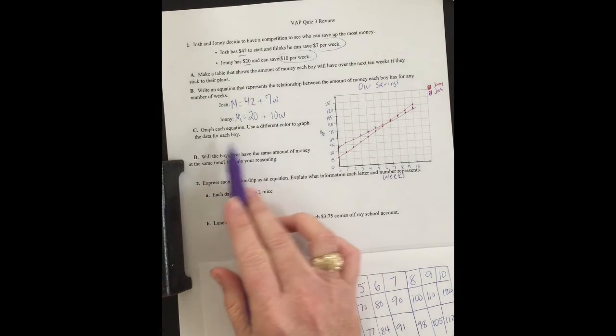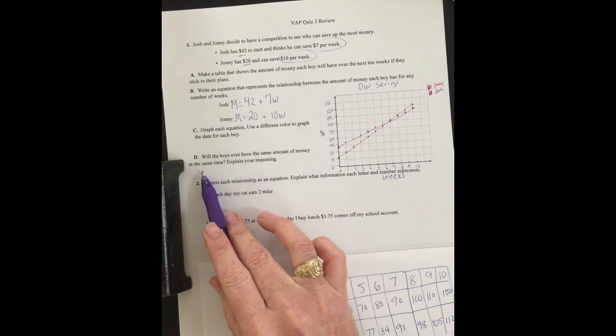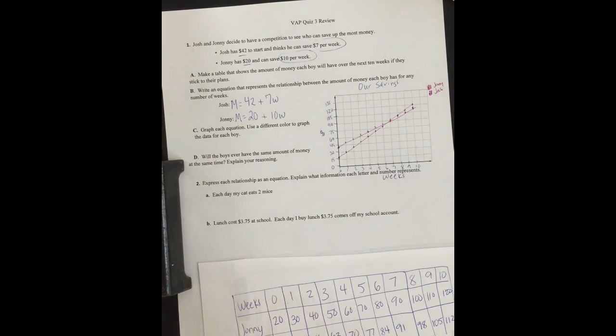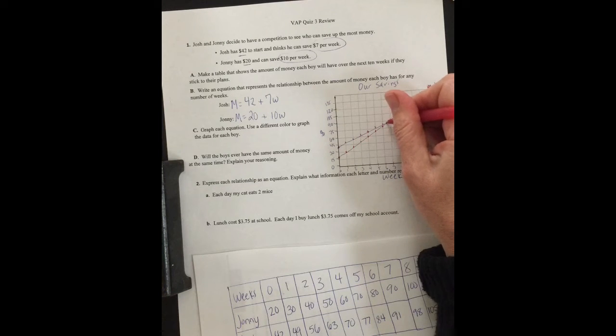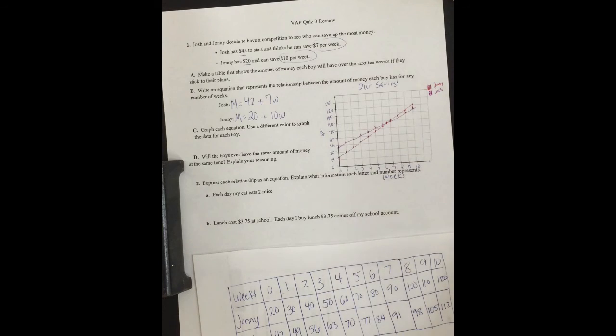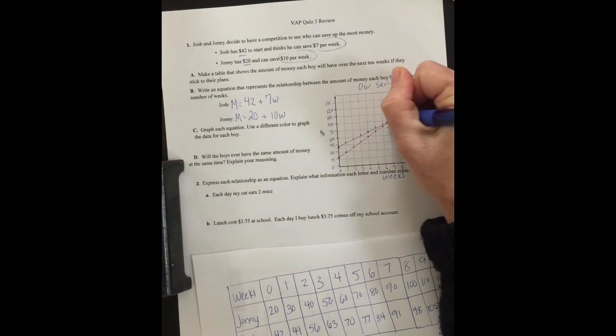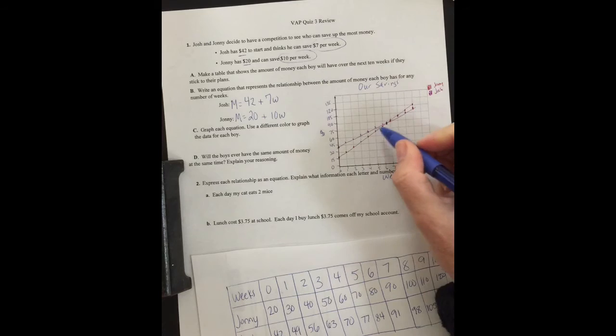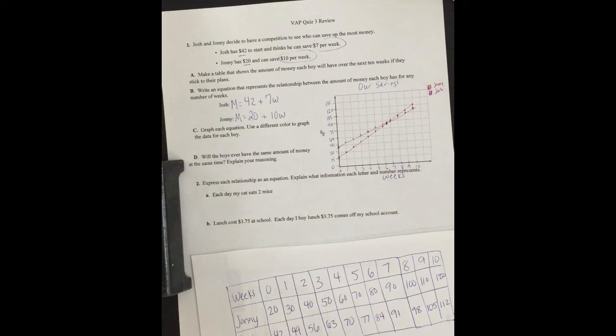Part D: Will the boys ever have the same amount of money at the same time? Explain your reasoning. Well, my answer would be yes, because they clearly overlap at some point here. At this point, where they overlap, where the purple starts to go below the red, where they hit, they'll have the exact same amount of money.